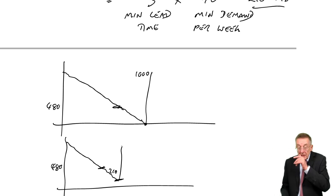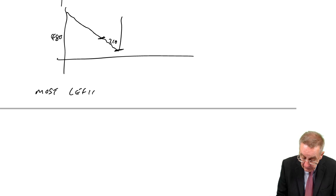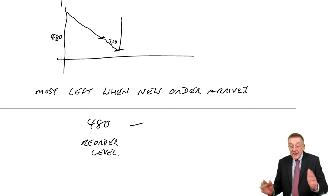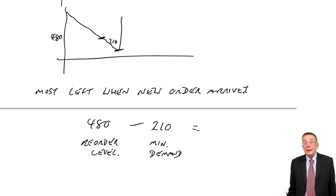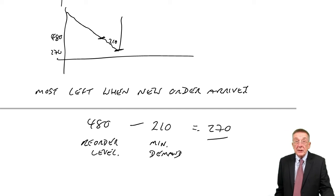And it says, what's the maximum inventory going to be? Well, surely the most that could be left when the new order arrives. We were reordering when we'd 480. The worst, or the best, whichever way you look at it. But the minimum demand over the lead time was 210. And therefore the most that could be left when the new order arrives are the difference of 270.